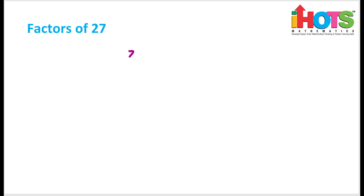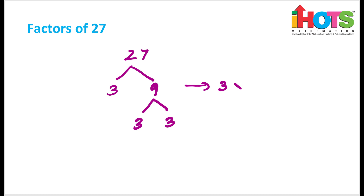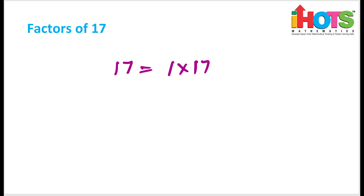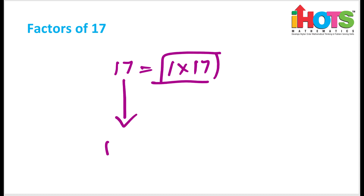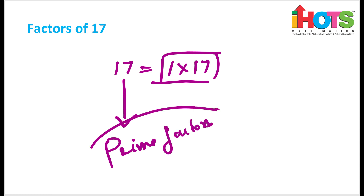Now 27: you can't divide by 2, but you can divide by 3, giving 3 into 9. Then 9 splits into 3 into 3. So the factors are 1, 27, 3, 9. For the last question, 17: you can only have 1 into 17 and cannot split this further. Numbers like this are called prime numbers, where the factors are 1 and the number itself — which I will discuss in detail in the coming class. Thank you, with that I have given you a brief overview of how to use factor trees to get factors. You can now practice on your own.